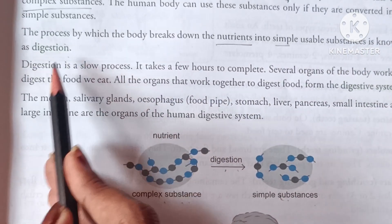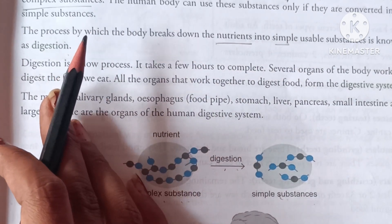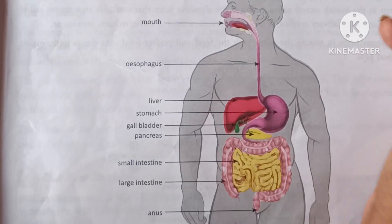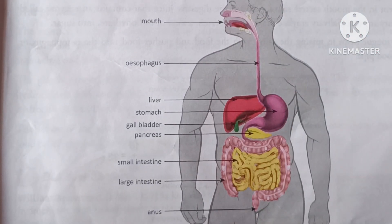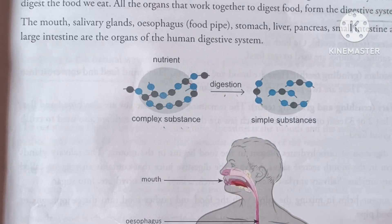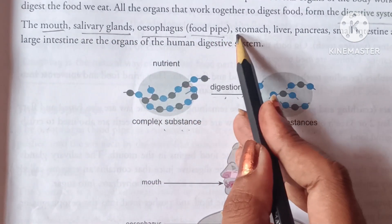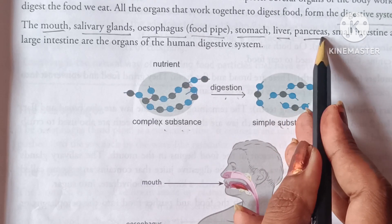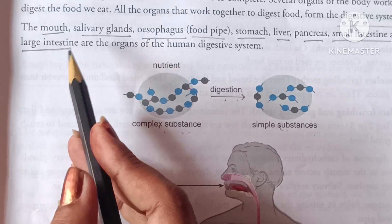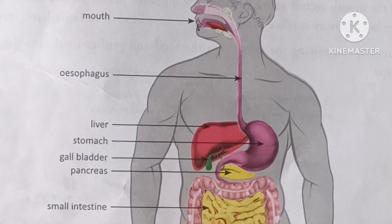This digestion process is very slow and takes place with the help of the digestive system. The digestive system includes the mouth, salivary glands, esophagus or food pipe, stomach, liver, pancreas, small intestine and large intestine. This human digestive system contains all these organs.